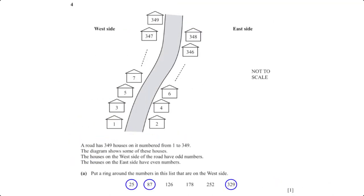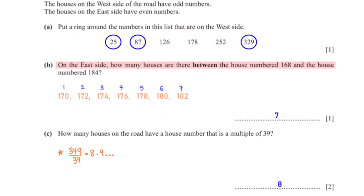A road has 349 houses numbered 1 to 349. Houses on the west side have odd numbers; houses on the east side have even numbers. Put a ring around the numbers on the west side from the given list — we circle the odd numbers: 25, 87, and 329. On the east side, how many houses are there between house 168 and house 184? The even numbers between 168 and 184 total 7 houses.